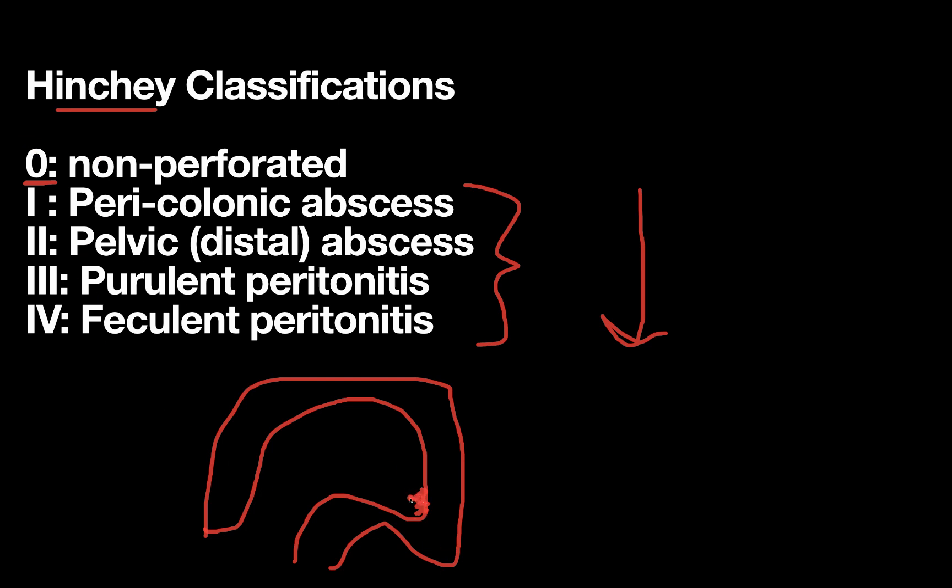However, if there is a little micro perforation, and then you get a little pocket of infection, a little abscess, but it's right there where the diverticulitis was, that's a class one or pericolonic abscess. That disease was severe enough, it perforated, you did get an abscess, but it stayed right in that initial spot.